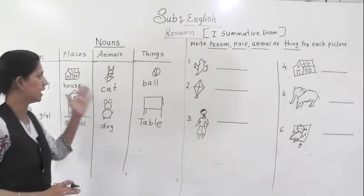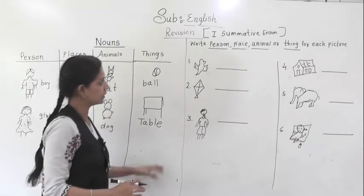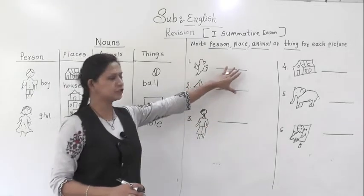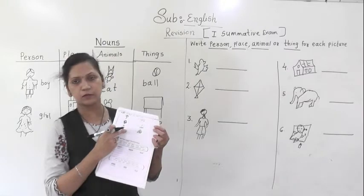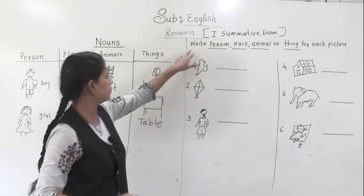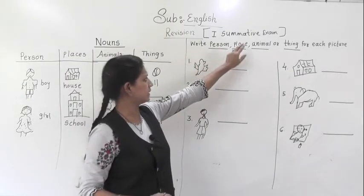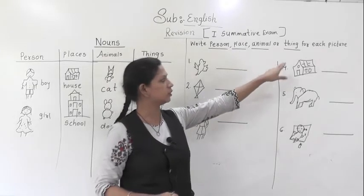Person, places, animals and things. So, let's start our worksheet. This is your worksheet page. You can see here. This we are going to solve today. So, write person, place, animals or things for each picture.